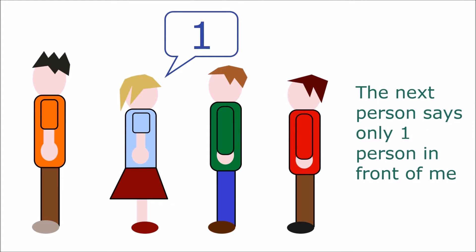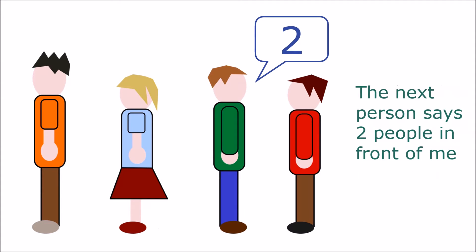That person knows there must be two people in front of them, so they tell you that. Now you know there are three people in front of you.